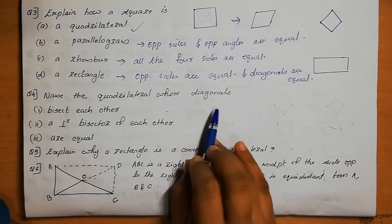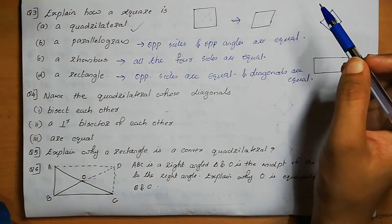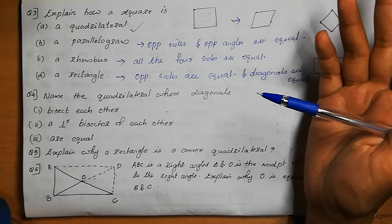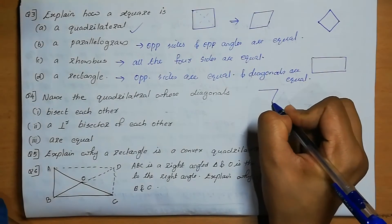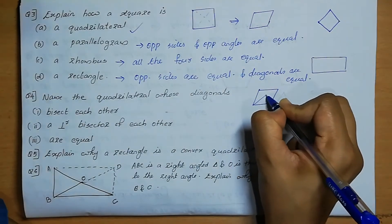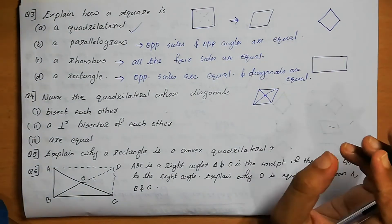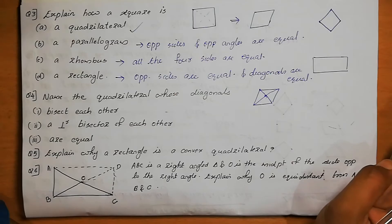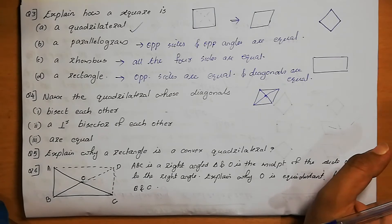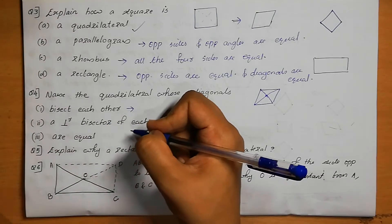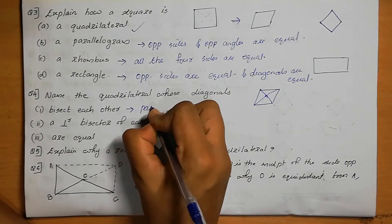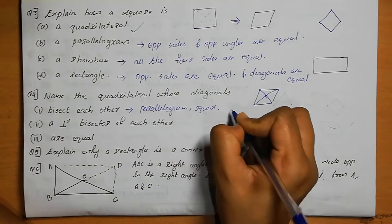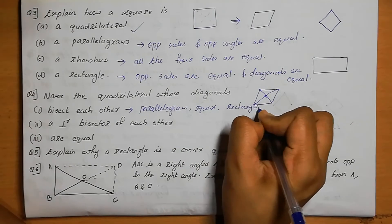Question 4: Name the quadrilateral whose diagonals bisect each other. In a parallelogram, diagonals bisect each other. In a square, diagonals also bisect each other. In rectangles, diagonals bisect each other. In a rhombus, diagonals also bisect each other. So the figures are: parallelogram, square, rectangle, and rhombus.